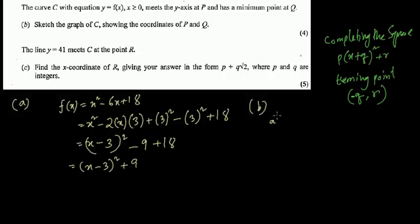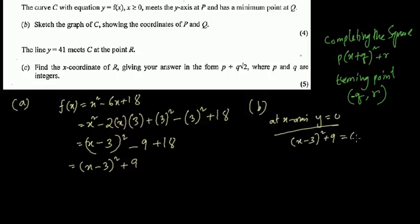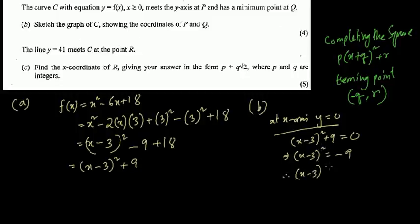To find where the curve cuts the x-axis: set (x - 3)² + 9 = 0, giving (x - 3)² = -9, so x - 3 = ±√(-9). This is not possible — square root of a negative number — so the curve does not cut the x-axis.